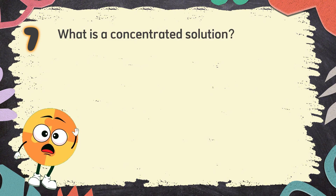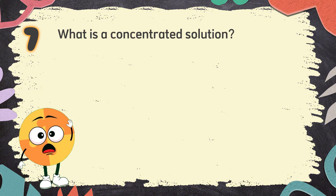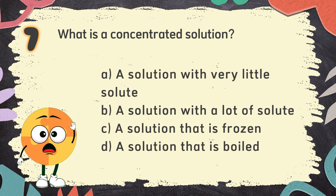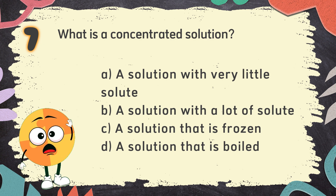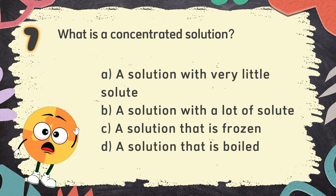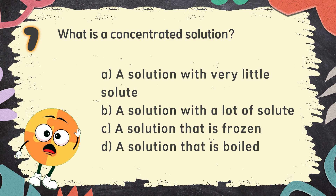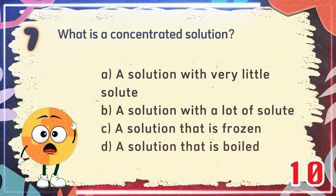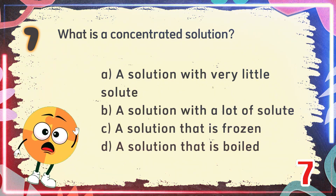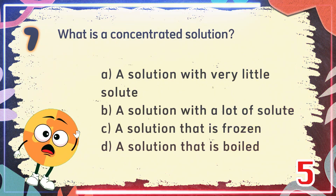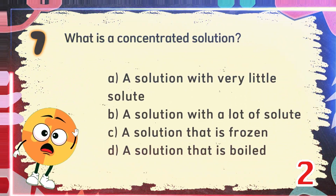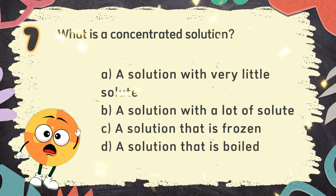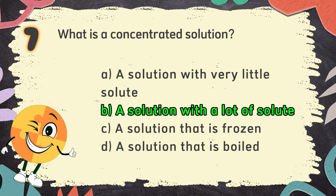Number 7. What is a concentrated solution? The choices are: A. A solution with very little solute. B. A solution with a lot of solute. C. A solution that is frozen. D. A solution that is boiled. The correct answer is B: A solution with a lot of solute.